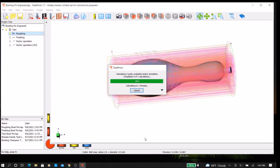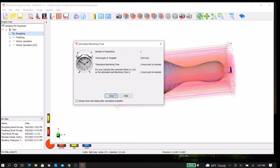Here we see the creation of the roughing pass toolpath in the DeskProto software.